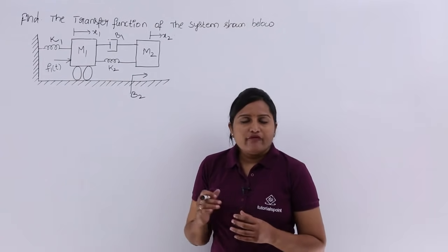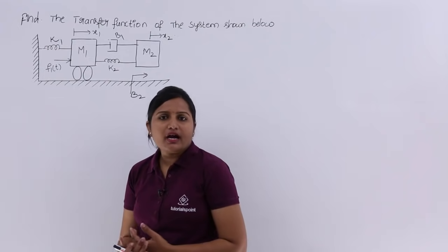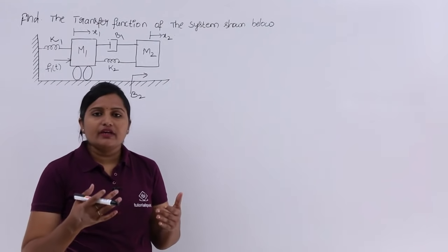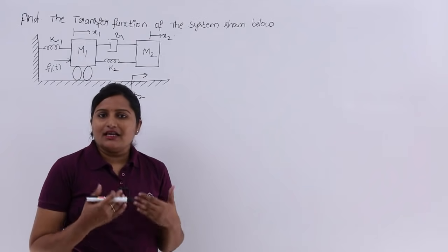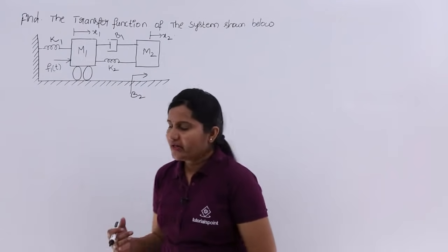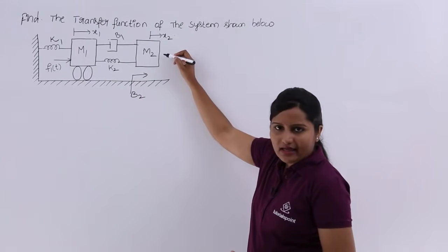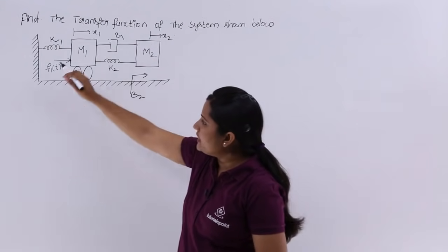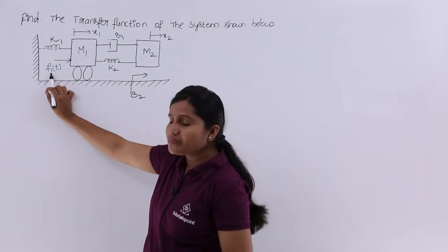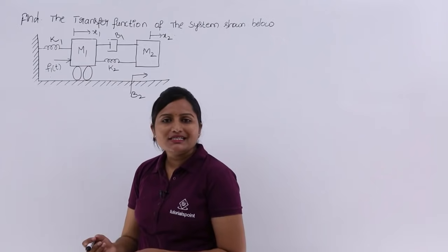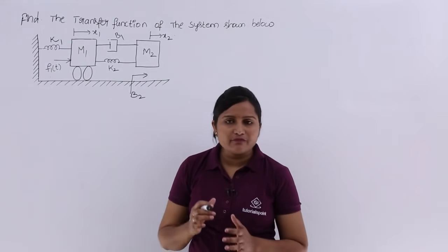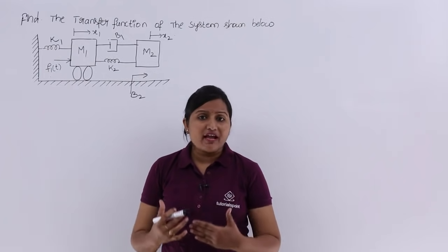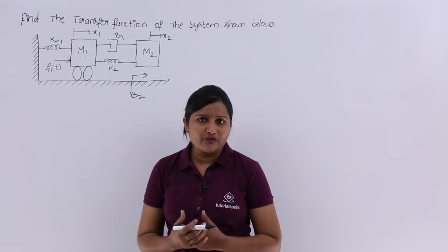When asked to find out the transfer function of the system, we need to take the output transform divided by the input transform. If you observe this diagram, the output is in terms of x2 and the input is in terms of f1. So x2(s) divided by f1(s) gives you the transfer function of the system.